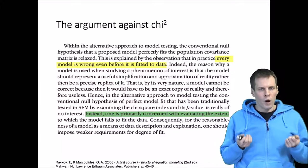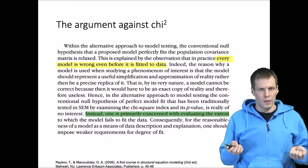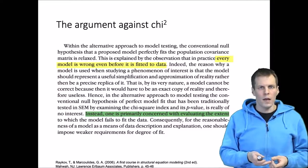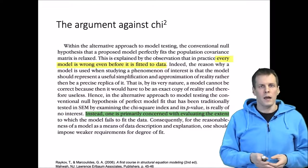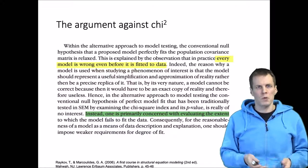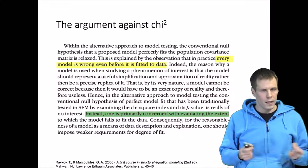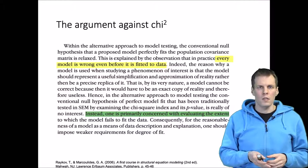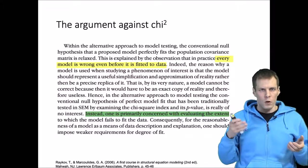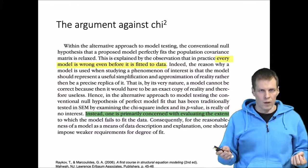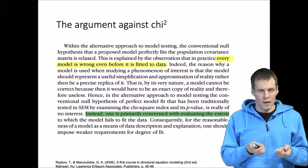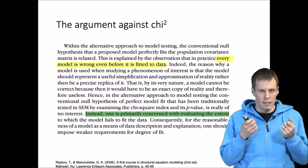The argument goes like this: every model is wrong even before it is fitted to the data. For example, if we model the relationship between x and y as linear, very few relationships are actually exactly linear in any real data set. Another example: if we have a measurement scale consisting of five agreement items, we assume that the measurement errors of those items are exactly uncorrelated — but there are many reasons to believe they are not exactly uncorrelated. The correlations may be low but they're not exactly zero.